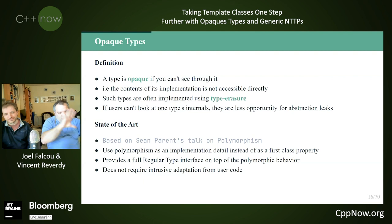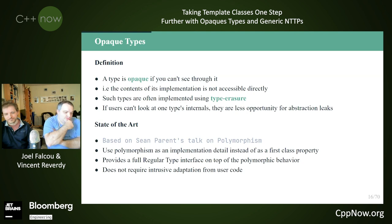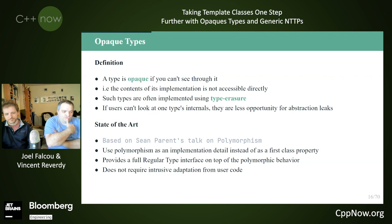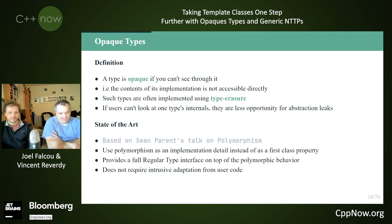A type is opaque if you cannot see through it — the content and implementation is not something you can access directly. One way to do this in C++ is to use type erasure to smudge the implementation details of a large variety of different types behind a given runtime-based type. The less people can look inside your type, the less they will be tempted to use side-channel information like how many members there are or the ordering of things.